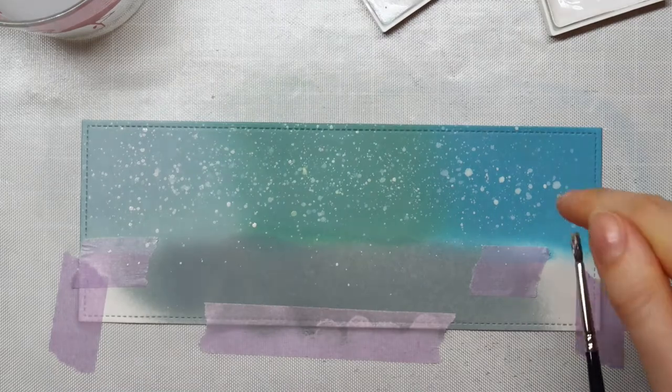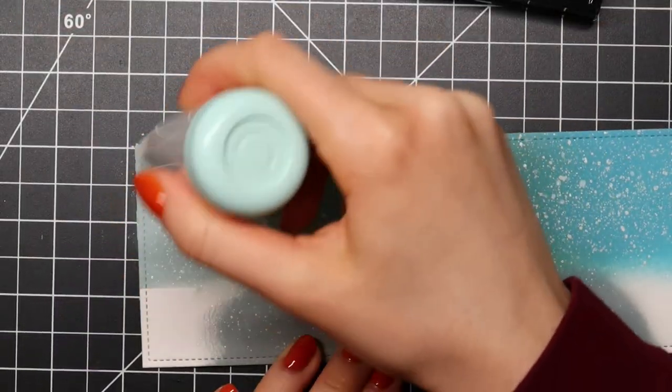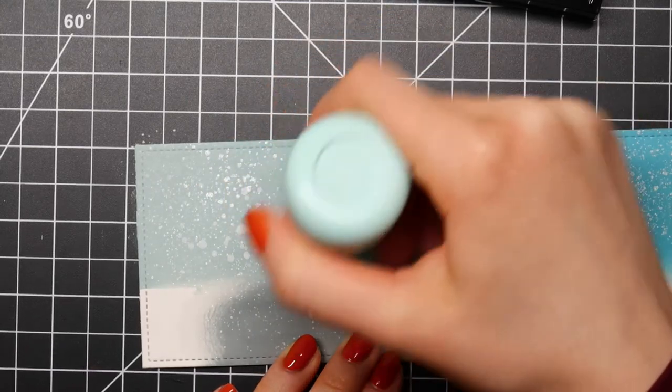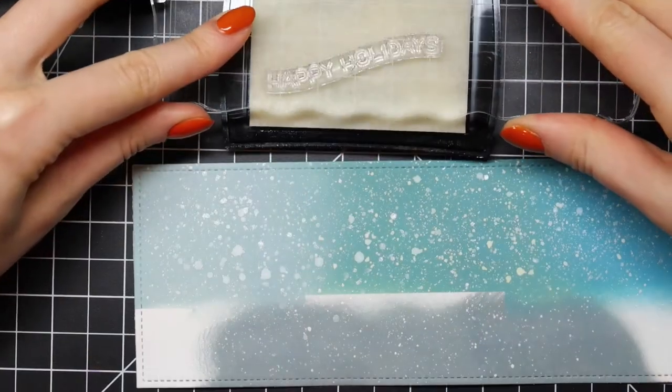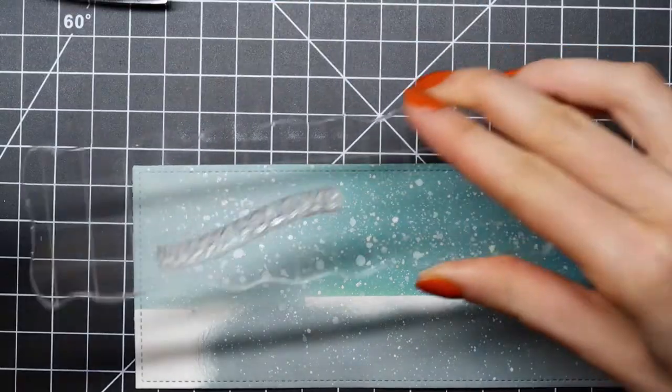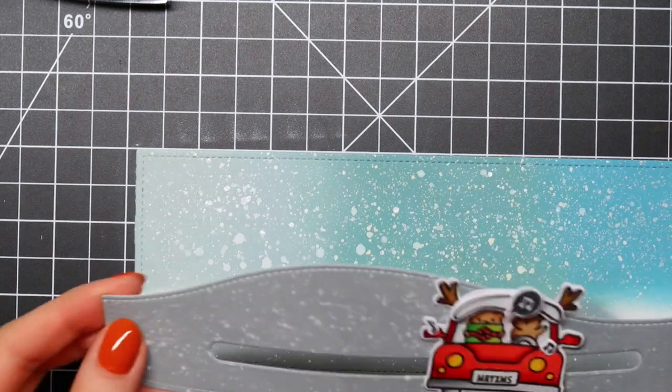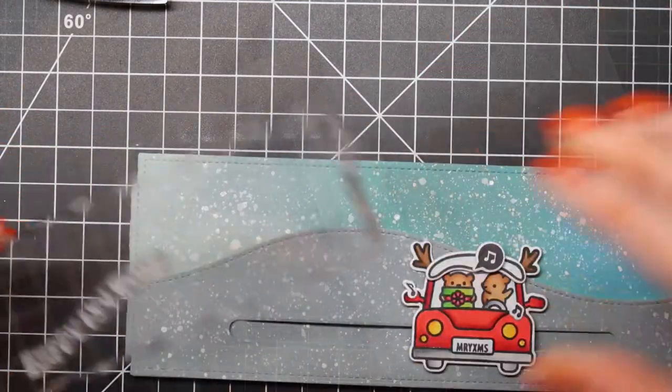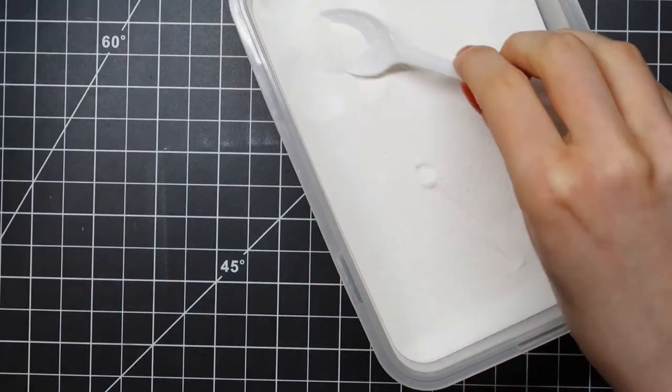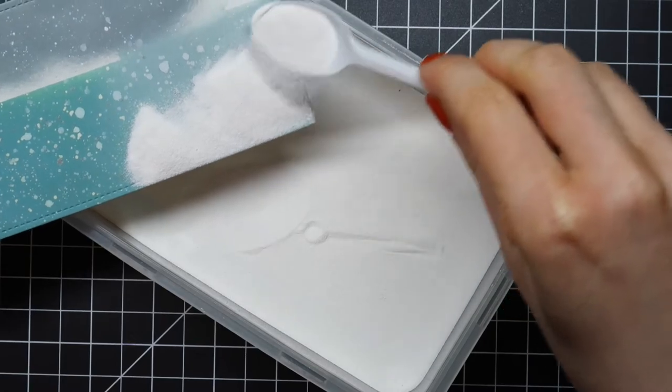After making sure that my background was completely dry, I'm going in with my powder tool to prep my cardstock. I'm using a sentiment stamp from the Winter Wavy Signs stamp set from Lawn Fawn, stamping the Happy Holidays sentiment using VersaMark ink, and sprinkling on opaque bright white embossing powder from WoW.